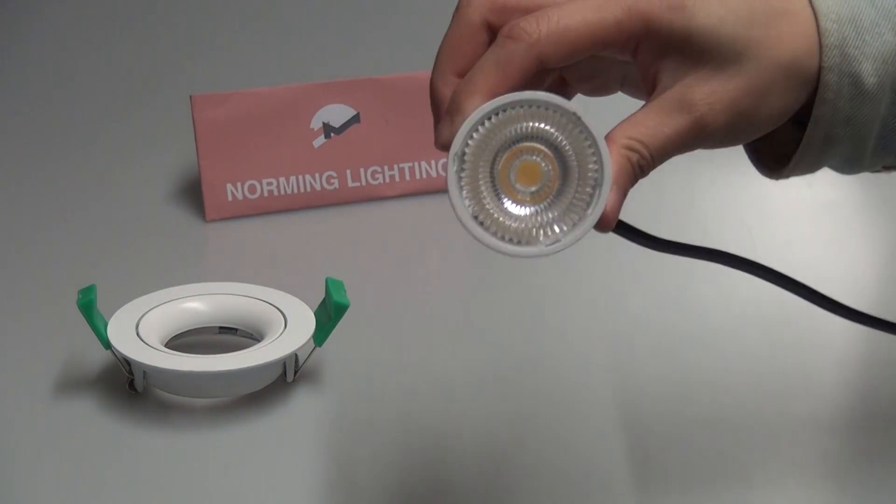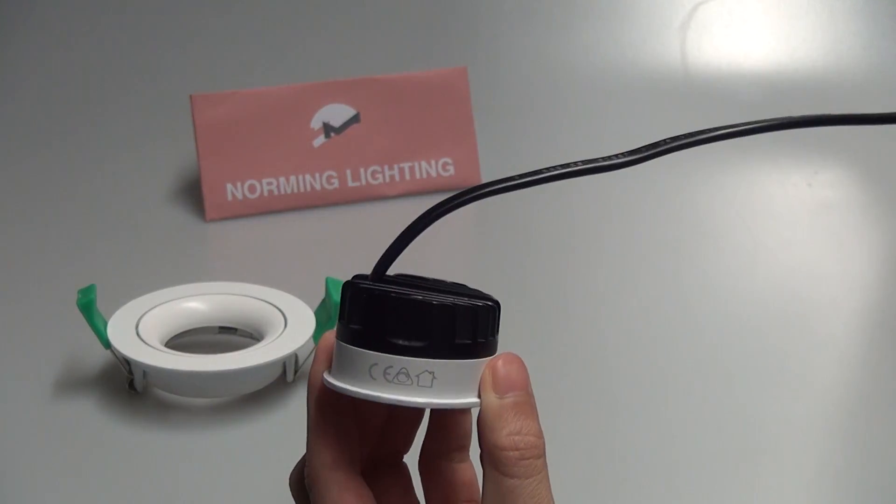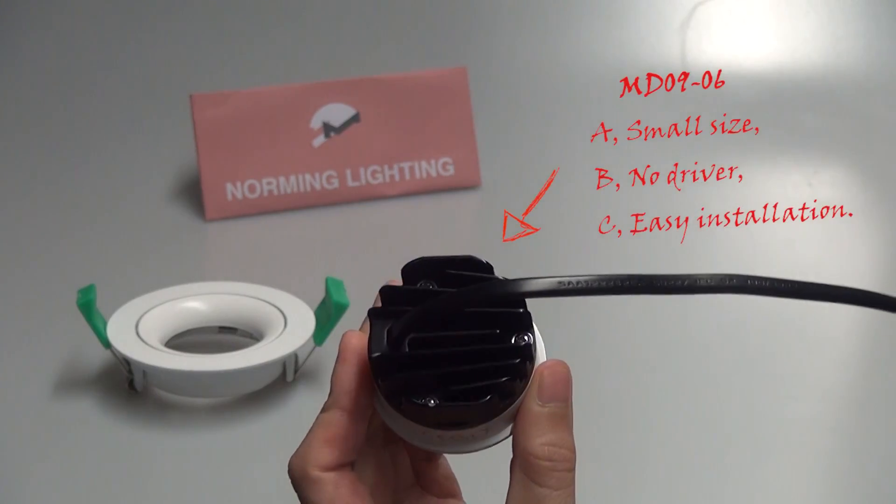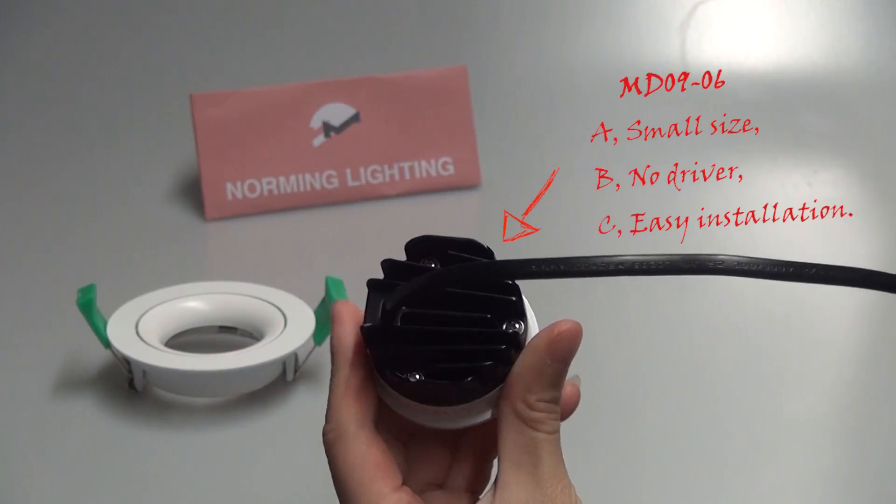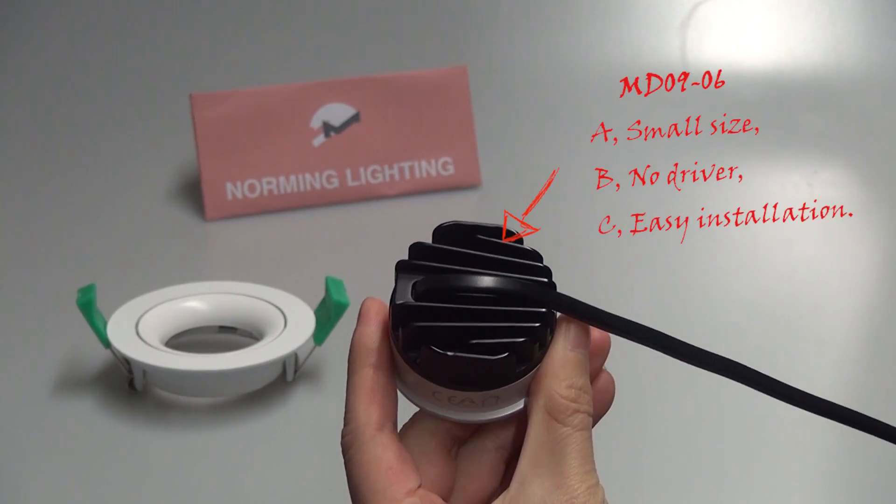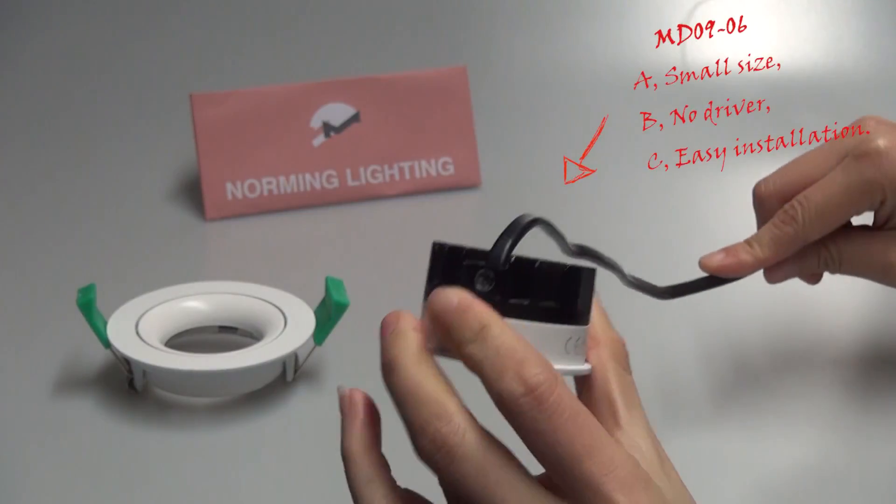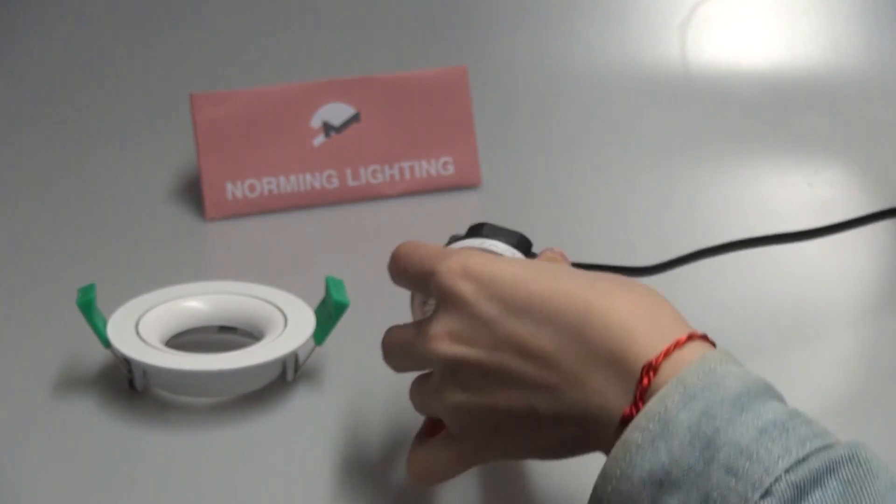Here is the MD09-06, which is only 13mm high and features an alternating current cable. With our extra driver, it's very easy for installation.